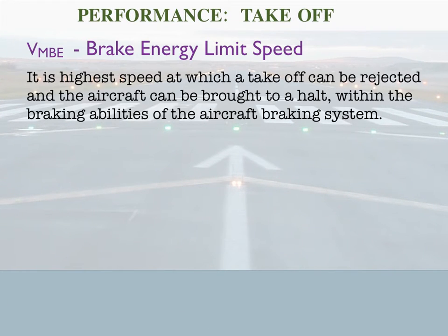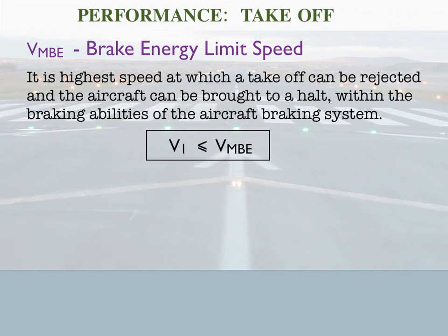Next is VMBE, the brake energy limit speed. It is defined as the highest speed at which a takeoff can be rejected and the aircraft can be brought to a halt within the braking abilities of the aircraft braking system. The braking effect depends on the type of system installed, and some have a limit. In some situations, particularly when aircraft are operating at very high altitudes where the task can be much higher, the brakes' efficiency is not adequate to bring the aircraft to a complete halt within the remaining distance available. Therefore the performance graphs spell out this particular speed. Obviously V1 cannot be greater than brake energy speed.